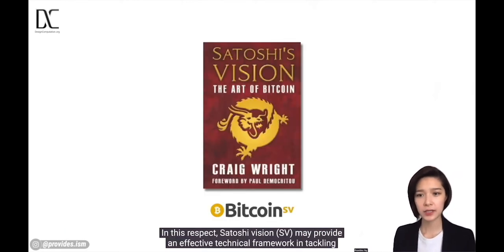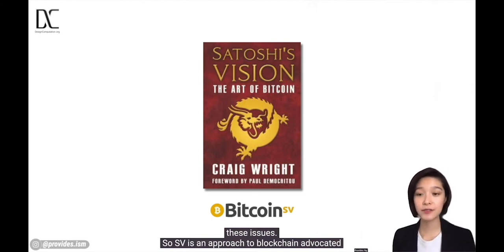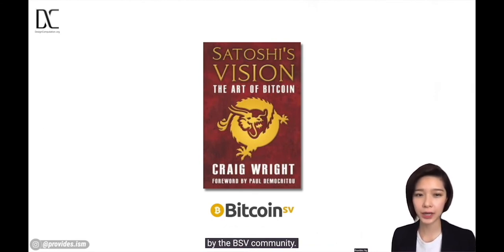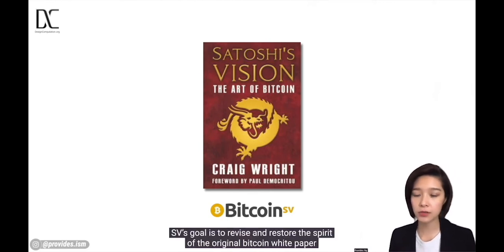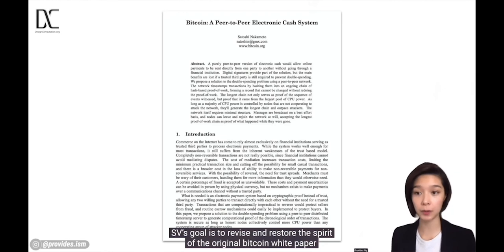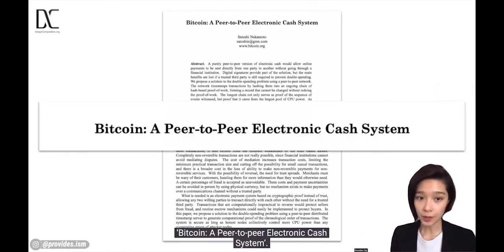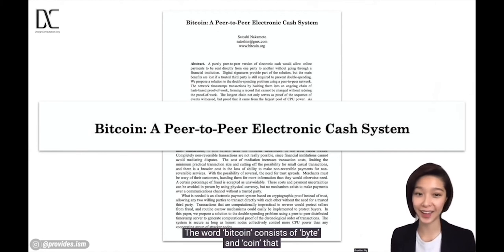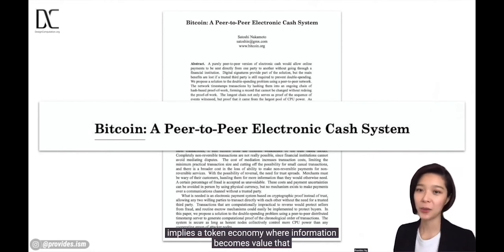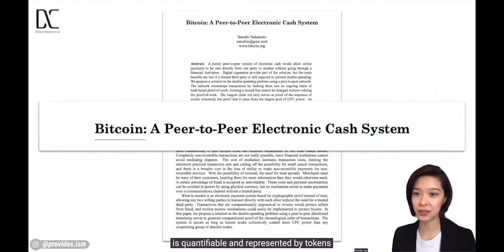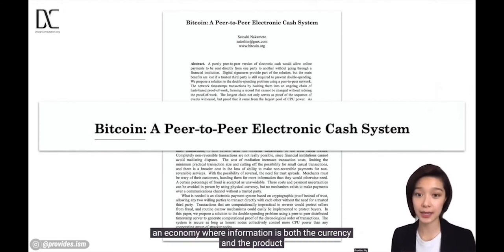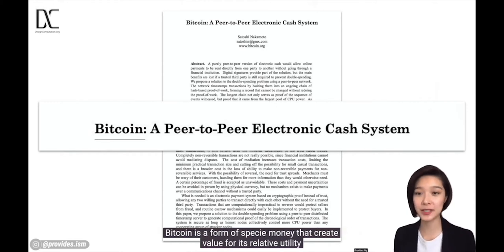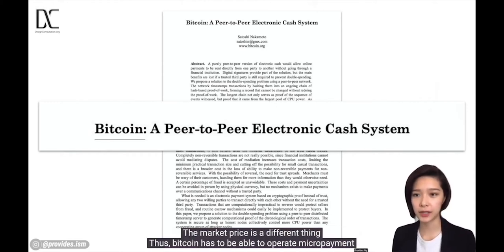In this respect, Satoshi Vision may provide an effective technical framework in tackling these issues. SV is an approach to blockchain advocated by the Bitcoin SV community. SV's goal is to revise and restore the spirit of the original Bitcoin white paper published by Satoshi Nakamoto — Bitcoin: a peer-to-peer electronic cash system. The word Bitcoin consists of 'bit' and 'coin', implying a token economy where information becomes value that is quantifiable and represented by tokens — an economy where information is both the currency and the product.